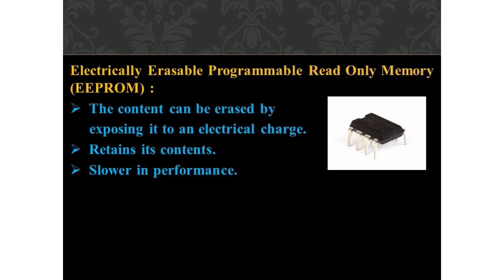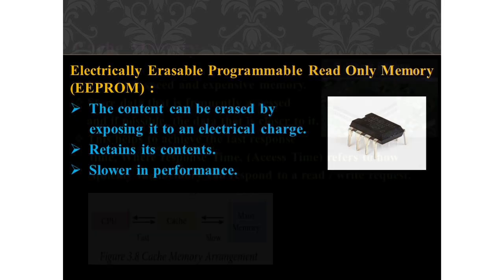The third type of ROM is Electrically Erasable Programmable Read-Only Memory (EEPROM). This is a special type of PROM that can be erased by exposing it to an electrical charge — unlike EPROM, which requires ultraviolet light. Like other types of ROM, EEPROM retains its content even when the power is turned off. Comparing with all other types of ROM, EEPROM is slower in performance.